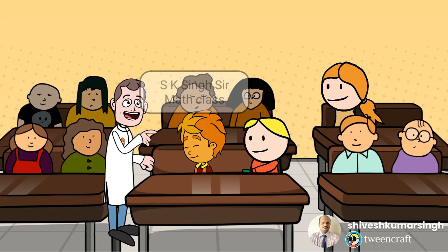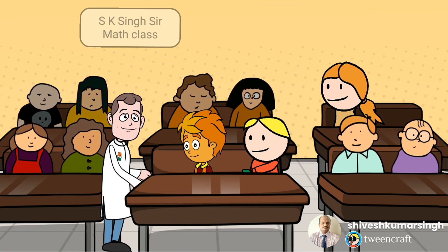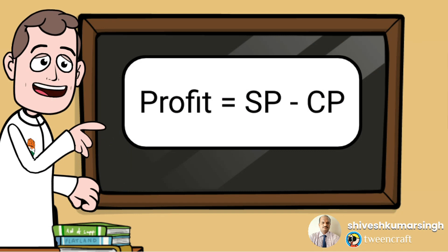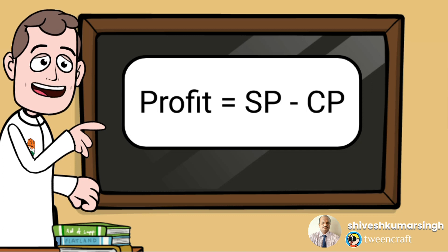So, Piku, you tell me when can we have profit. Sir, we can have profit when selling price is greater than the cost price. Very good, Piku. So profit occurs when selling price is greater than cost price. The formula for profit is: Profit = Sale Price minus Cost Price, meaning SP minus CP.